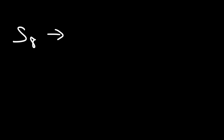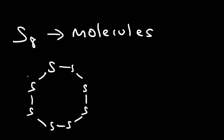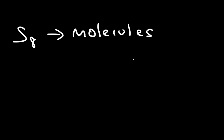Sulfur typically exists in the form of S₈. Sulfur is made up of molecules — one sulfur unit has eight sulfur atoms connected in an octagonal shape. It's a molecule because it's composed of multiple atoms, but it's not a compound because it's only composed of one type of atom, so it's a pure element.